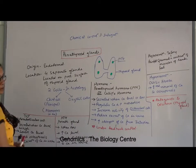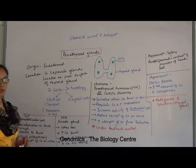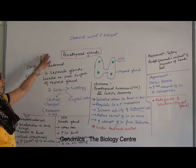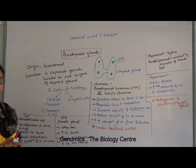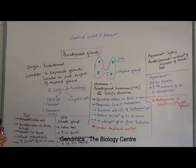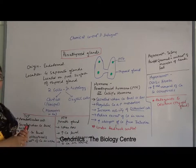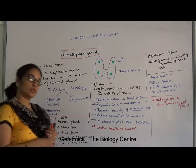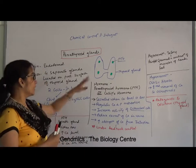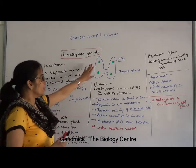In this section, we will talk about the parathyroid glands. Parathyroid glands, as you know, are present on the posterior side of the thyroid gland.